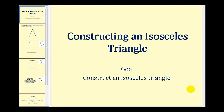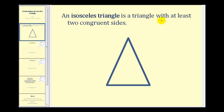Welcome to a lesson on constructing an isosceles triangle. Let's first review the definition: an isosceles triangle is a triangle with at least two congruent sides. Looking at this triangle, it is isosceles if two or more sides are congruent. It follows from the isosceles triangle theorem that the angles opposite the congruent sides are also congruent, so this angle would be congruent to this angle here.